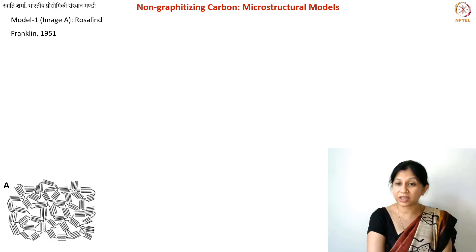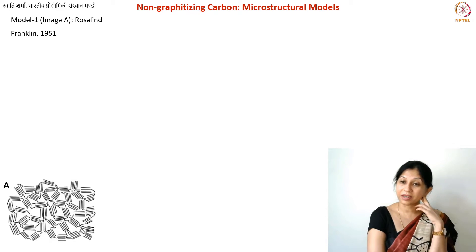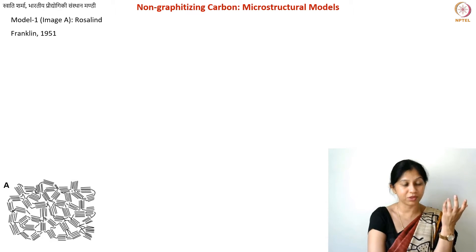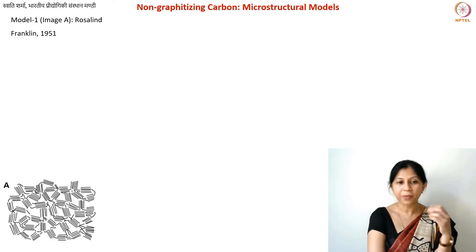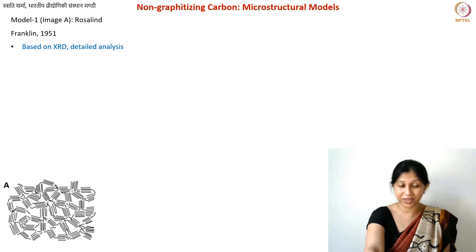I am going to describe three or four primary models here. This is an active field of research and people are still trying to understand non-graphitizing carbons. The first model by Franklin was the first time someone formally differentiated graphitizing from non-graphitizing carbons. People knew experimentally that certain polymers will not give you graphite no matter how high you heat them, but these carbons could also be useful and studied as a different class of material. Franklin's classification was based on X-ray diffraction studies.